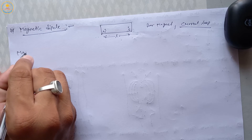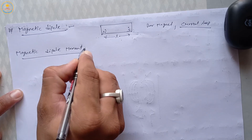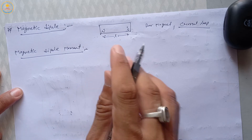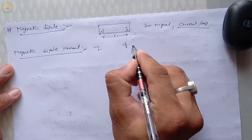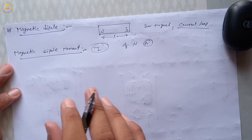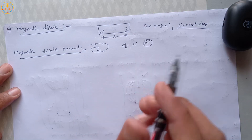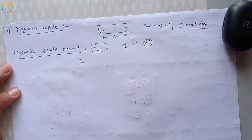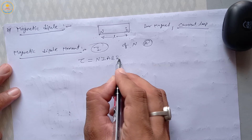Next is magnetic dipole moment. For a coil, suppose we have a coil of cross-sectional area A with current I flowing through it. If the normal to the plane of the coil is at an angle theta with the magnetic field, then a torque τ will be produced. This torque τ equals NiAB sinθ, from the previous chapter.